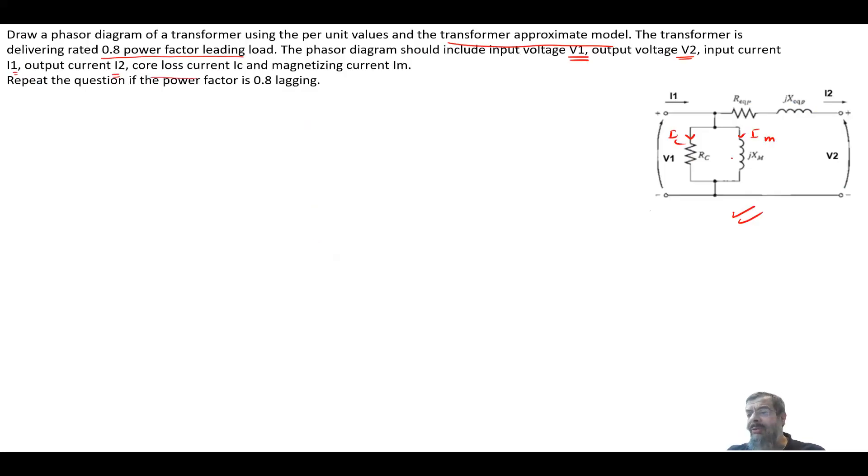We start from the secondary side with V2. V2 has a magnitude of 1 at an angle of 0. The first equation is V1 equals V2 plus I2 times R-equivalent plus j X-equivalent, or equal to V2 plus I2 R-equivalent plus j I2 X-equivalent. This will give me V1.